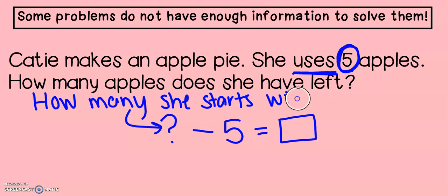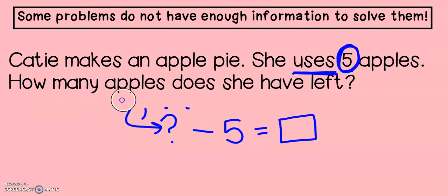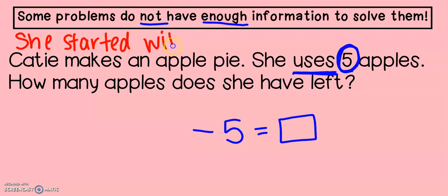So if I have a problem like this, I am going to need to add some information because there is not enough. What if we say she started with, how about, let's say, eight apples? And of course, if you're doing this by yourself, you can pick your own number, but I'm going to pick eight apples. Now, since we know how many she started with, now we are able to solve the problem to see how many she has left.